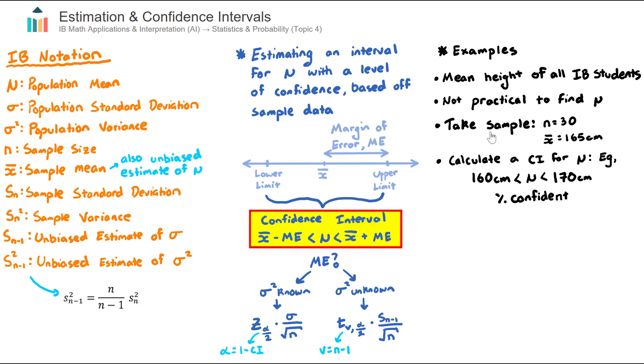It's not practical to find μ, which is the population mean. So instead what I can do is take a sample. Let's say I sampled 30 students nearby to me and I found that the average height, which we call x̄, the sample mean, was 165 centimeters. Well, this 165 centimeters, the sample mean, is a pretty good estimate for μ, the population mean, but it won't be μ exactly. That'll depend on the types of students that I have sampled.